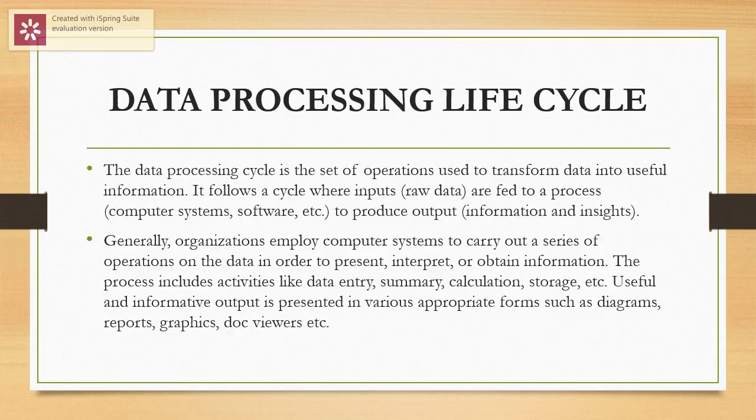Continuing with the data processing life cycle, we can define it. The data processing cycle is a set of operations used to transform data into useful information. It follows a cycle where inputs — that is raw data — are fed to a process, that is a computer system or software, to produce output, that is information and insights.